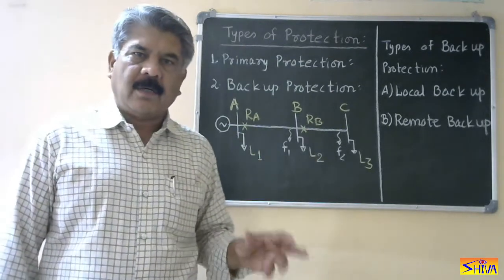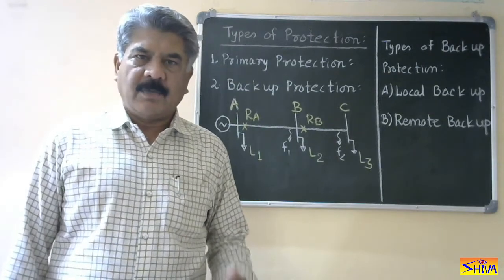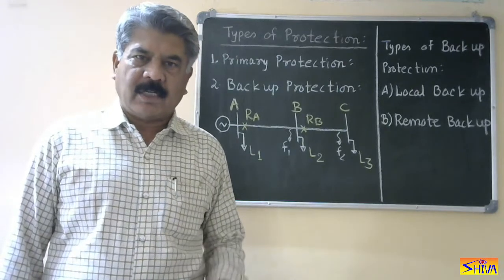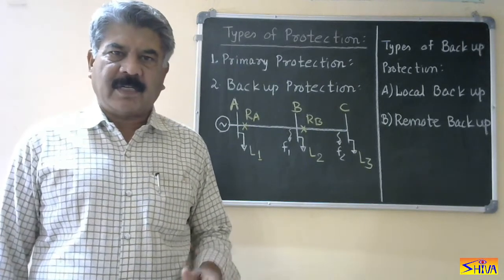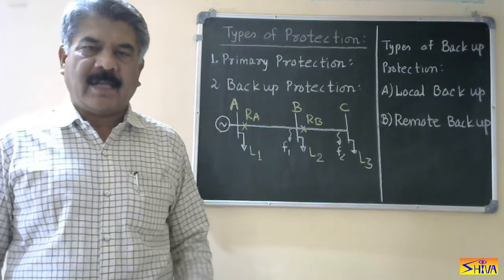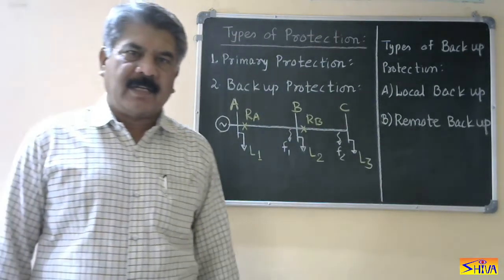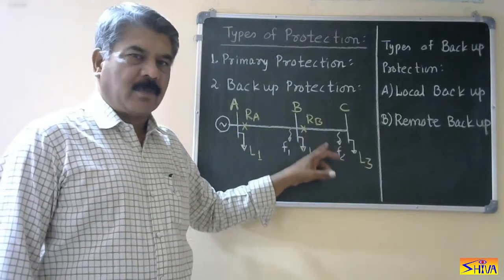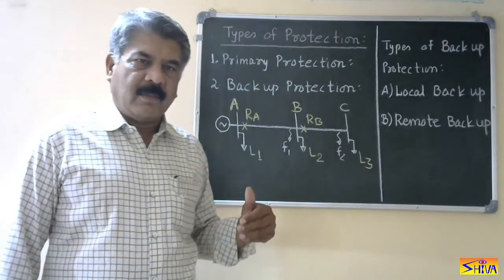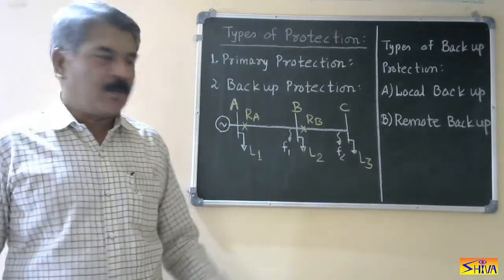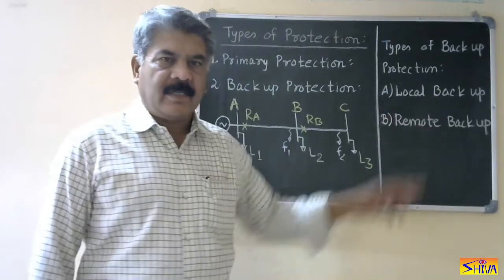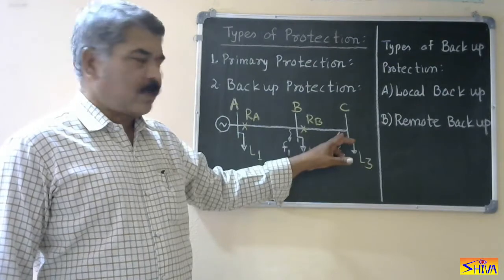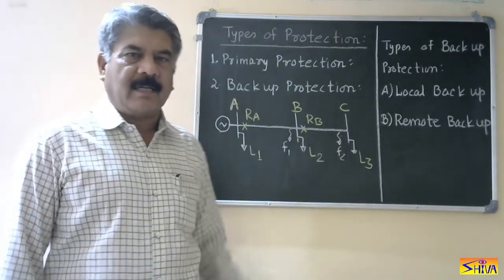The drawback of local backup is that it requires additional cost. If we duplicate the entire protection system, we provide two relays, two circuit breakers, two trip coils, two trip circuits, two DC power supplies, and so on — so the cost is more. But the advantage is that it operates in the same least possible time. If the primary protection fails, the local backup protection operates in the same time, and only the faulted portion is disconnected from the system.